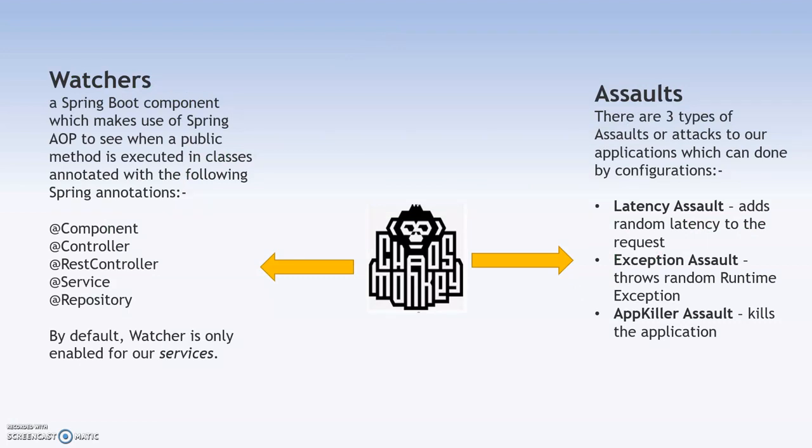Chaos Monkey comprises two entities: one is watchers and another is assaults. A watcher is a Spring Boot component which makes use of Spring AOP — Aspect Oriented Programming — to check the public methods executed in classes annotated with the following annotations: @Component, @Controller, @RestController, @Service, and @Repository. By default, the watcher is only enabled for services, meaning classes annotated with the @Service annotation.